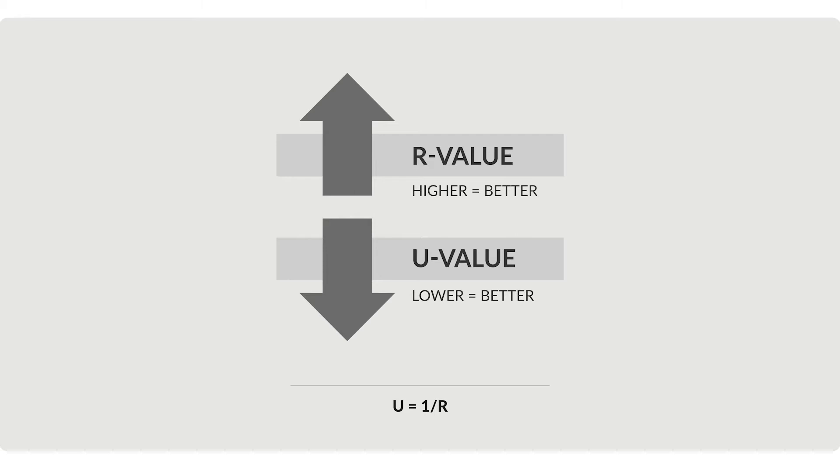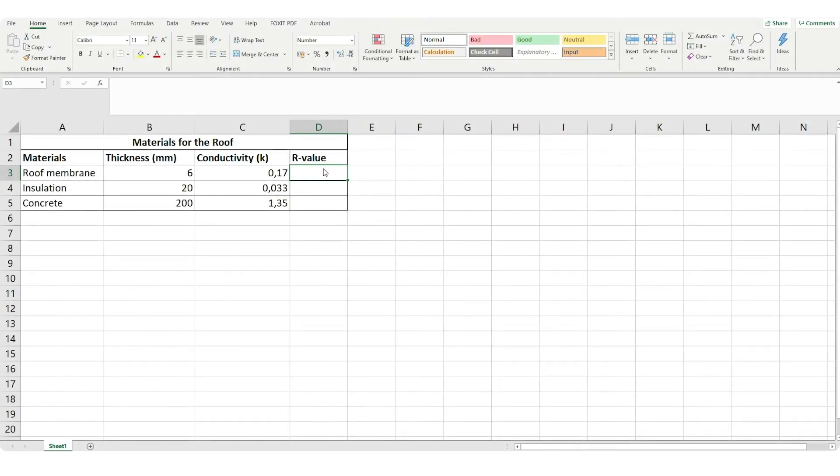To calculate the U-value of a wall or roof, we must look at all the materials it is made of. All the layers of materials together are considered the roof or wall assembly.